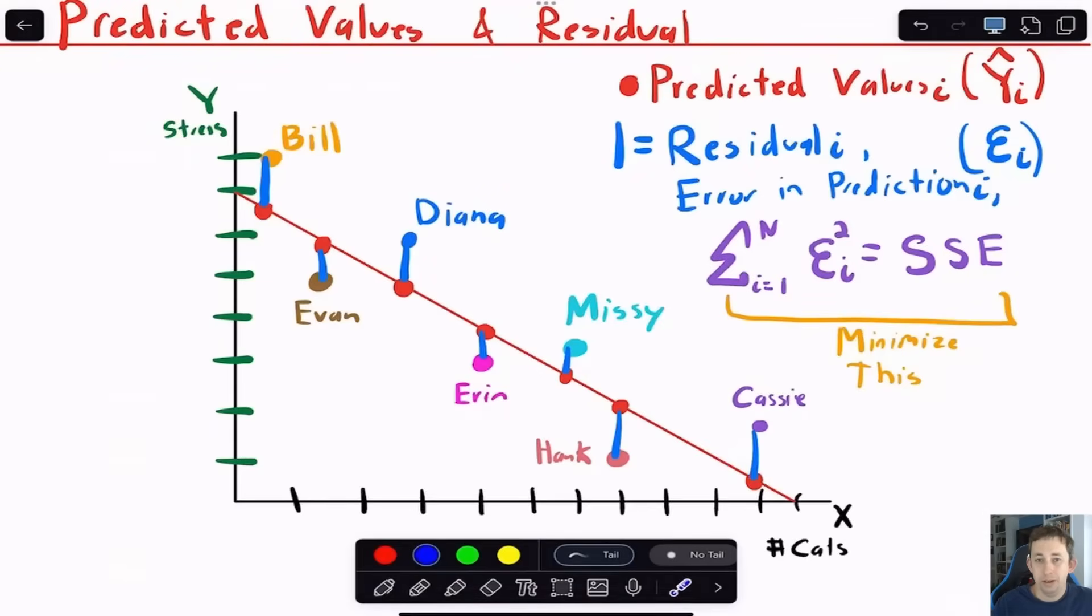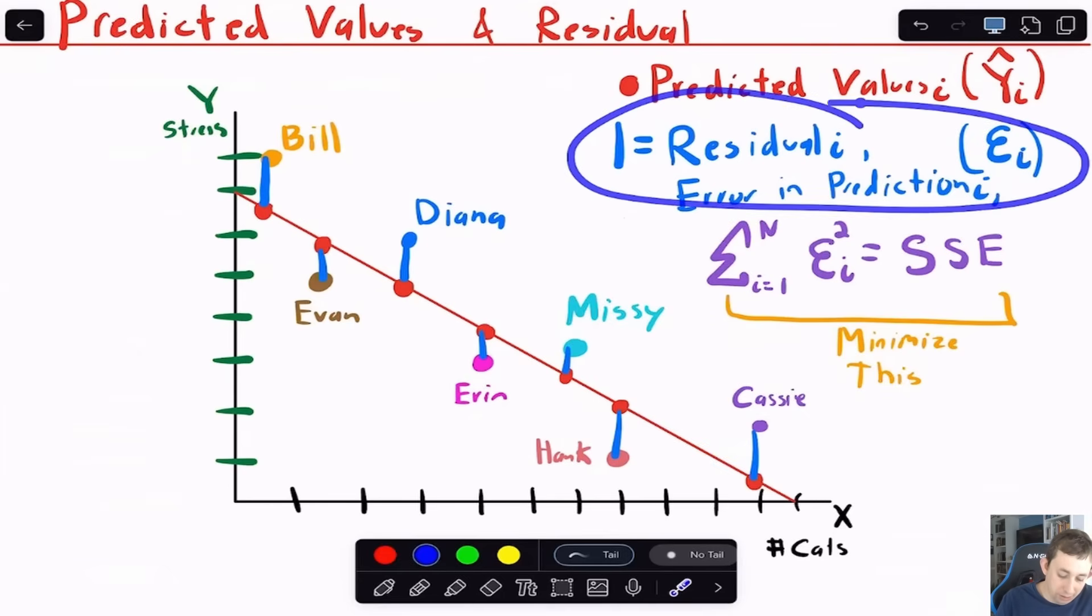Now in order to talk about why we drew the line this way, we need to add an additional feature to this graph. That additional feature is going to be this residual or the error in prediction or epsilon i. Now when I drew this line, I'm going to have all these red dots at exactly the number of cats that each of these people have. So for example, for Diana, Diana has, I don't know, three cats. And so based on this line, I would expect your stress level to be here. Now her stress level isn't actually here. That's just her predicted stress level based on my regression of the number of cats. Her actual stress level is up here. And so what's happening is we didn't predict this exactly right. There's an error in our prediction. The error in the prediction is going to be our residual, which is this difference right here.